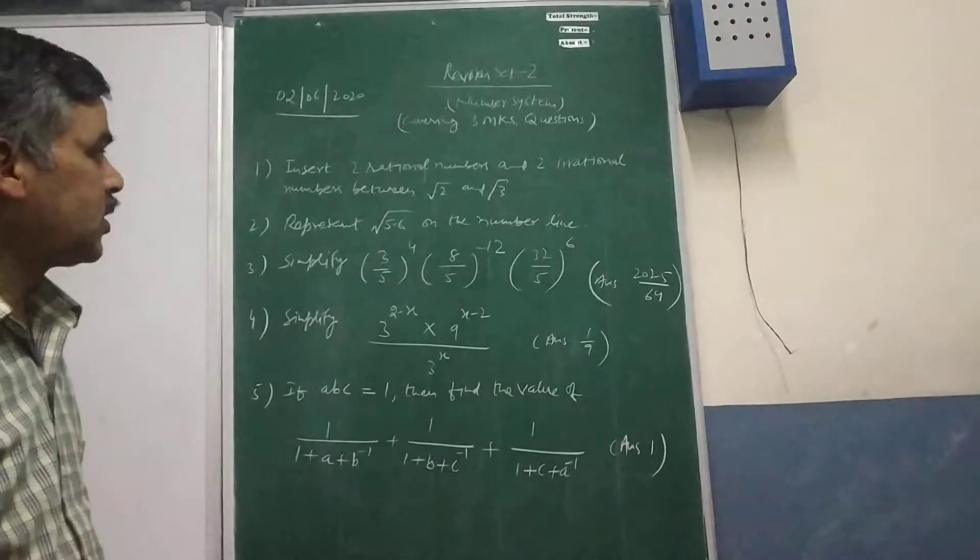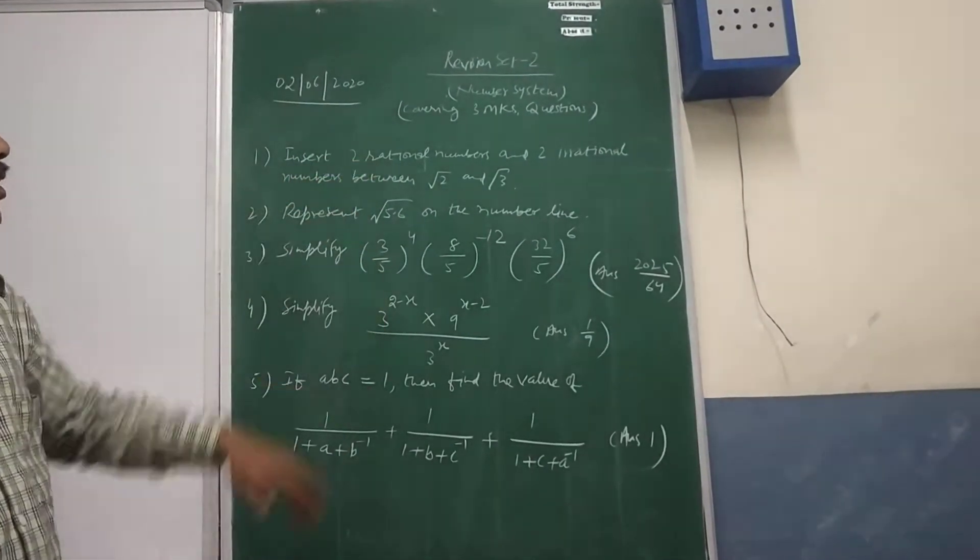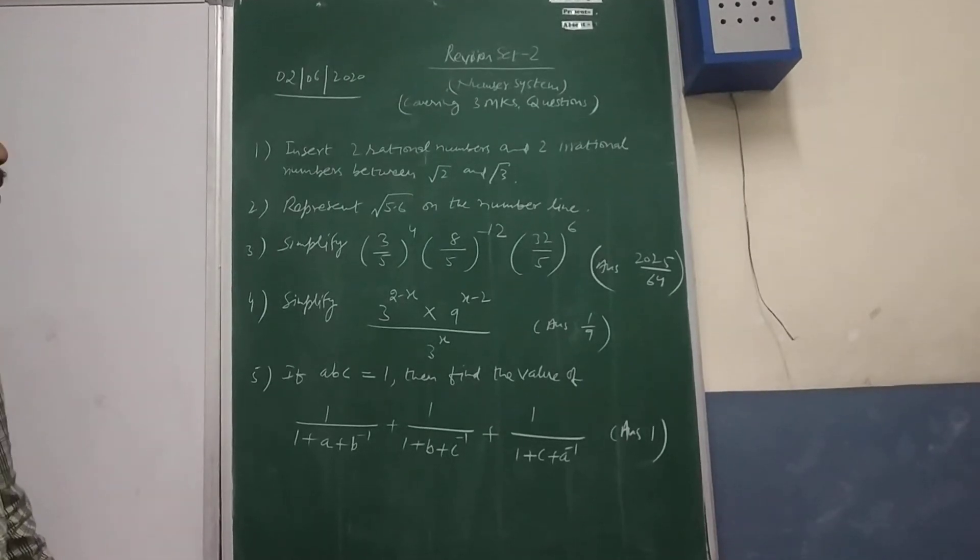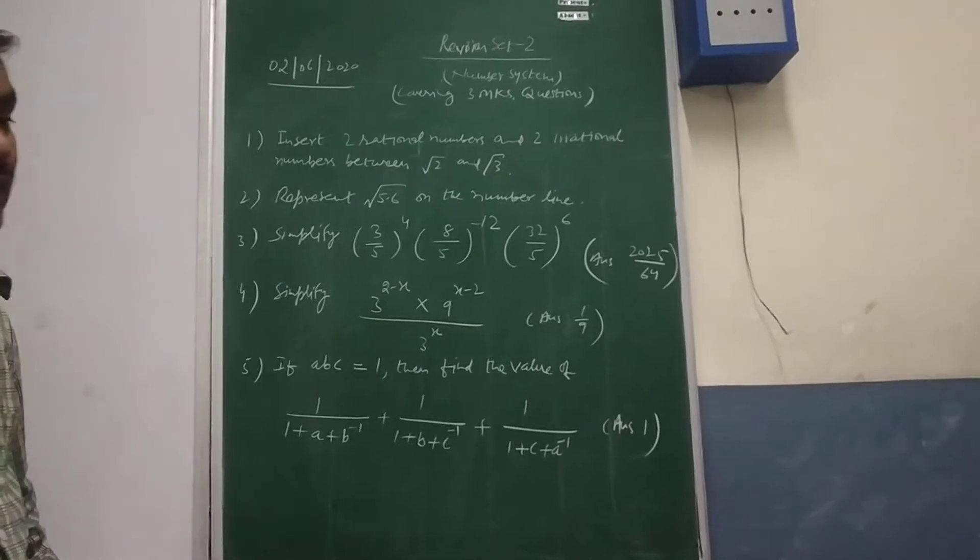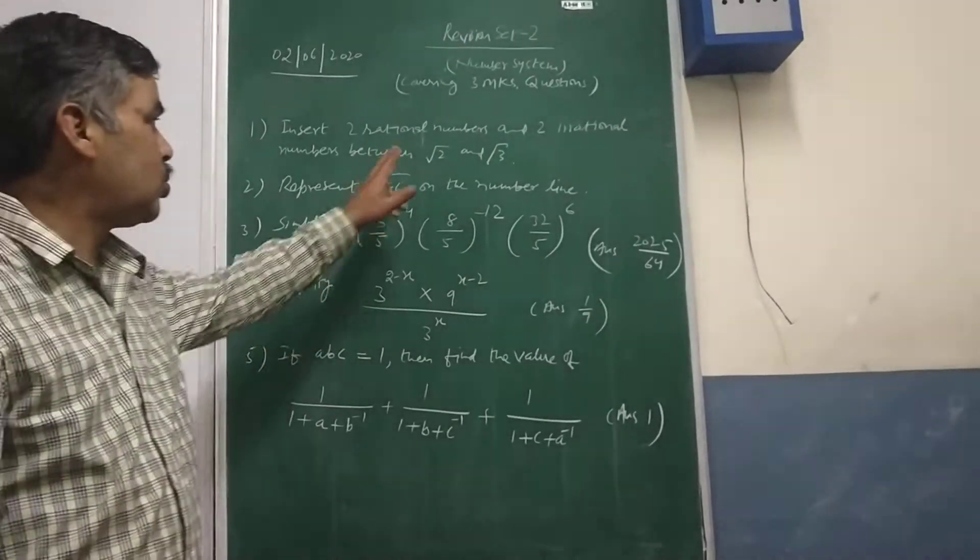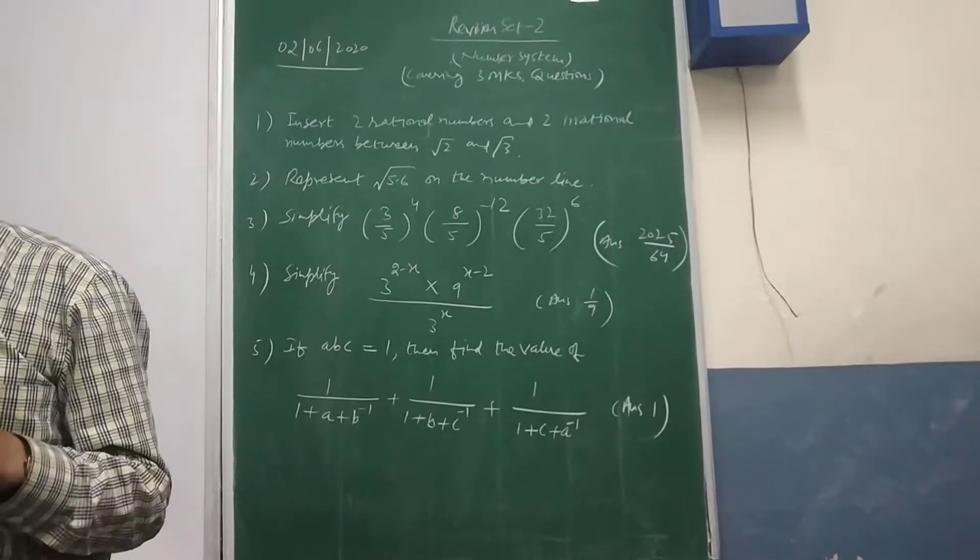You need to check the answer and I am sharing the hints to solve these questions. Like here today the first question I have taken insert two rational numbers and two irrational numbers between √2 and √3. So you know √2 and √3 are both the prime numbers in third form that's why they are irrational numbers.